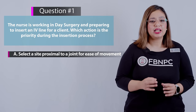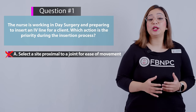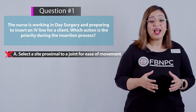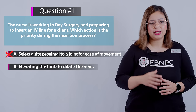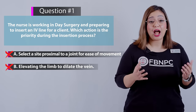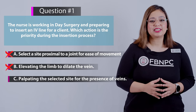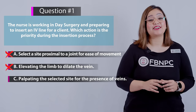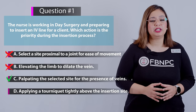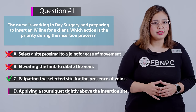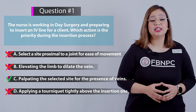Option A: Select a site proximal to a joint for ease of movement — that is incorrect. Selecting a site proximal to a joint may compromise stability and increase the risk of infiltration. Option B: Elevating the limb to dilate the vein — also incorrect, as this action would not dilate the vein and is not part of the insertion process. Option C: Palpating the selected site for the presence of veins — that is correct, as this is a priority action during the insertion process. Option D: Applying a tourniquet tightly above the insertion site — incorrect, as this can impede blood flow and increase discomfort.